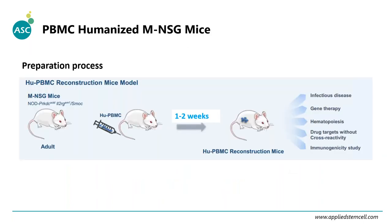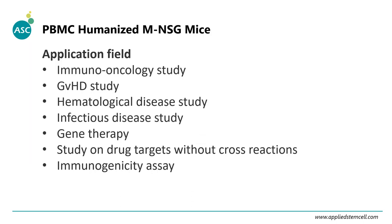The preparation of humanized PBMC mice involves collecting donor PBMC cells and injecting them through the mouse tail vein. This process takes one to two weeks. These humanized PBMC-reconstituted mice are widely used for infectious disease research, gene therapeutics, immunogenicity studies, graft-versus-host disease, and cell therapeutics such as CAR-T efficacy testing.